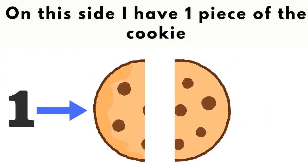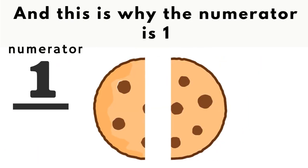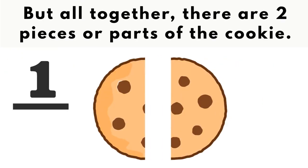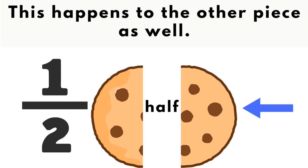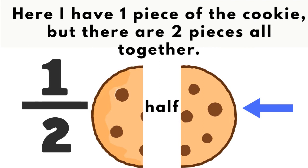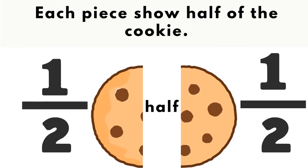On this side, I have one piece of the cookie, and this is why the numerator is 1. But all together, there are two pieces or parts of the cookie. This happens to the other piece as well — here I have one piece of the cookie, but there are two pieces altogether. Each piece shows half of the cookie: one half on the left, one half on the right.